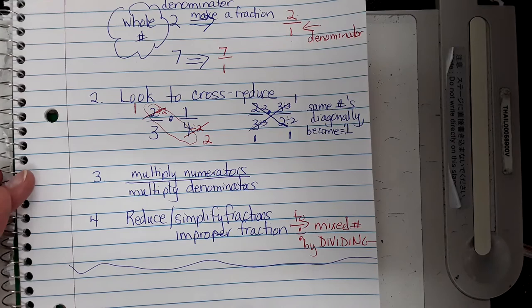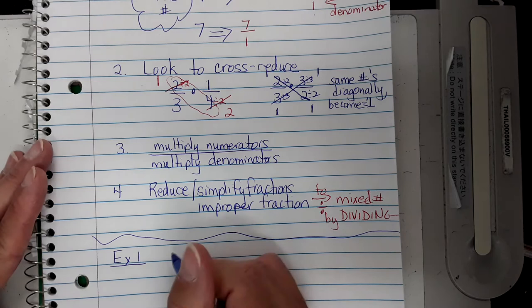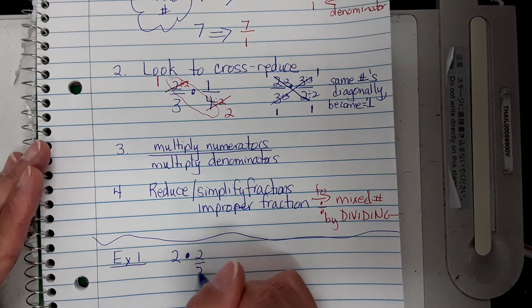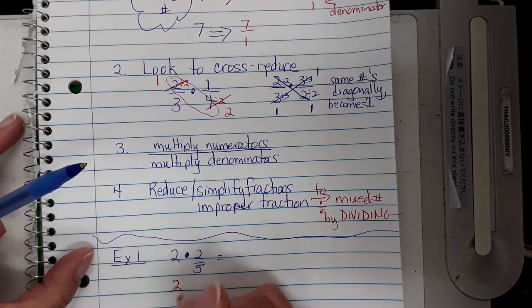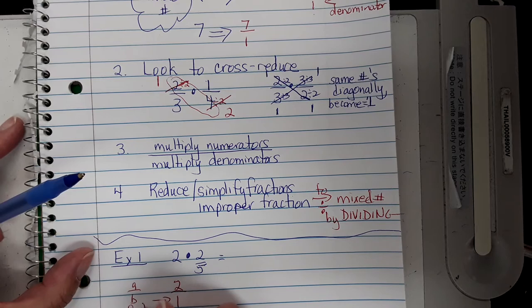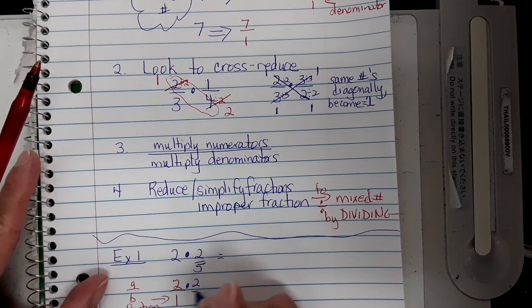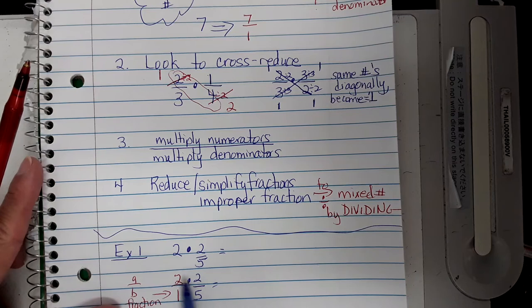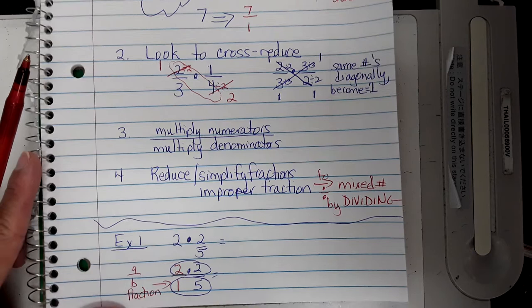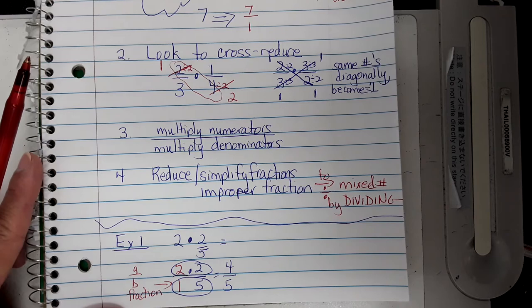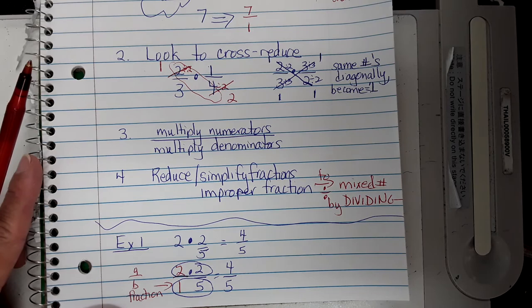Example one: 2 times 2 fifths. First, put 2 over 1 to make it a fraction, so you have 2 over 1 times 2 over 5. Look to cross-reduce — I can't reduce either of these numbers. So multiply the numerators: 2 times 2 is 4. Multiply the denominators: 1 times 5 is 5. That gives 4 fifths, which can't be simplified. That's your answer.